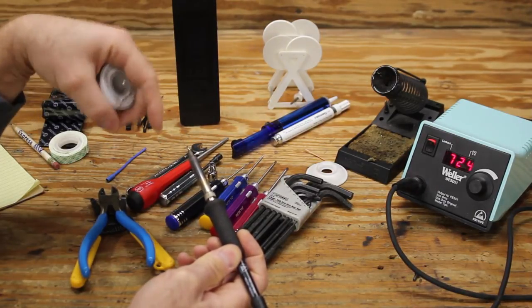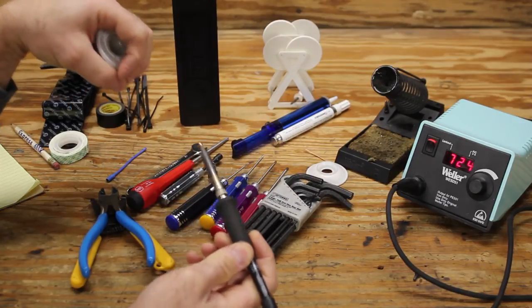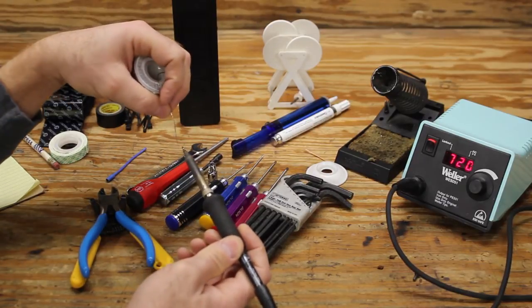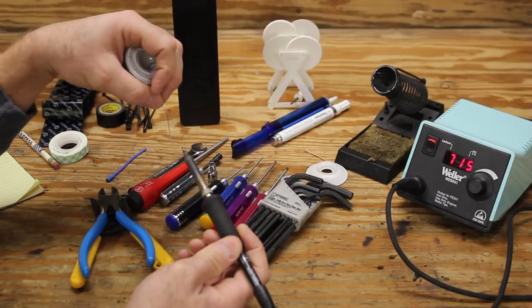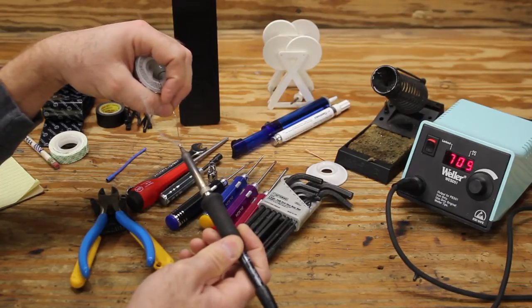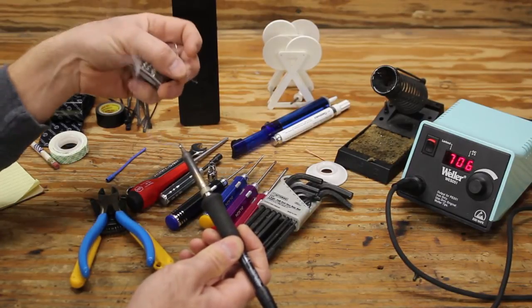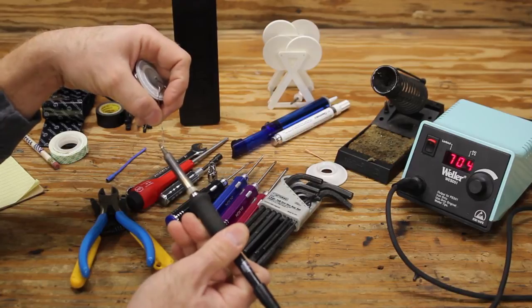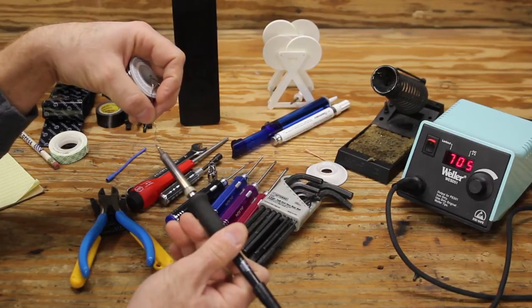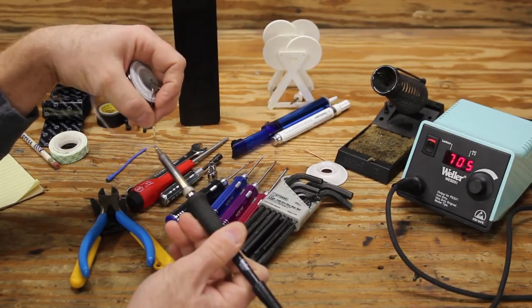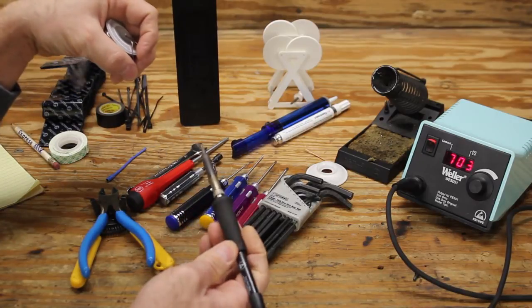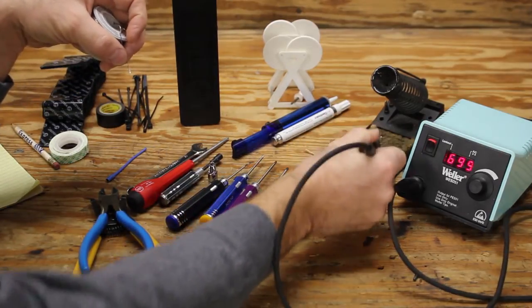You want to tin the tip before you start soldering with the soldering iron, because if you don't, impurities will stick to the bare metal tip when you go to do your first soldering joint. And that's not good. By doing this, you're cleaning the metal with the rosin in the solder and putting a layer of solder on there so that when it's exposed to impurities later on, they won't stick to it.